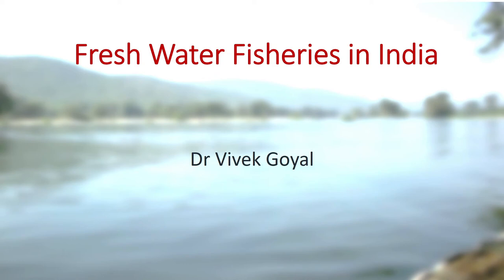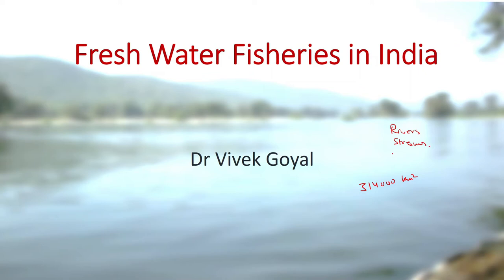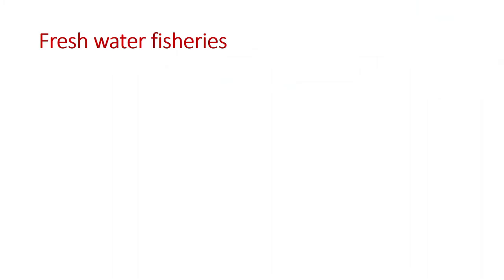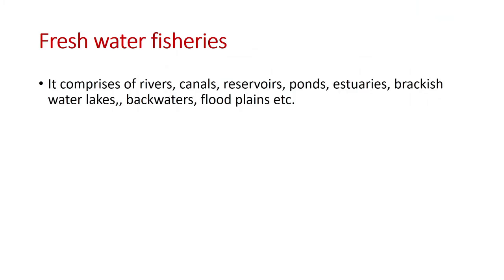Today we are going to discuss about the freshwater fisheries in India. India has a total water surface area of approximately 3,14,000 square kilometers with numerous water resources in the form of rivers, streams, ponds, and other reservoirs. So freshwater fisheries can be exploited very much for the development of fisheries in India. Freshwater fisheries include mainly capture fisheries but also culture fisheries.